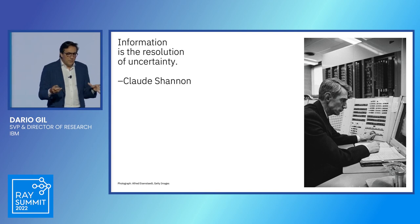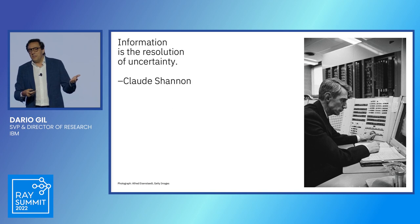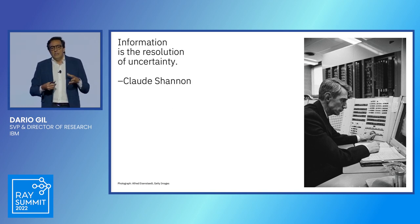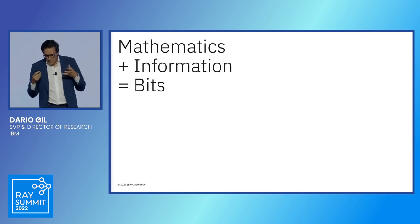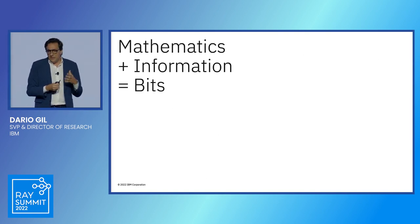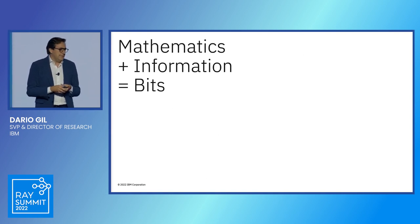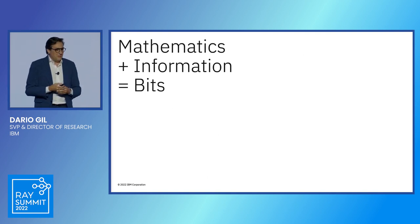Famously, Shannon separated physics and information — he said independent of how you want to process information, whether you're going to use vacuum tubes or transistors, or communicate information through wires or wirelessly, you can decouple the medium and still understand how you can reliably create, store, manipulate, and send those bits error-free. So we had this grounding, this base of sanction that we've built modern computing on — on the idea of bits and on this separation between the physical manifestation of how we create and process the bits, and the information itself.